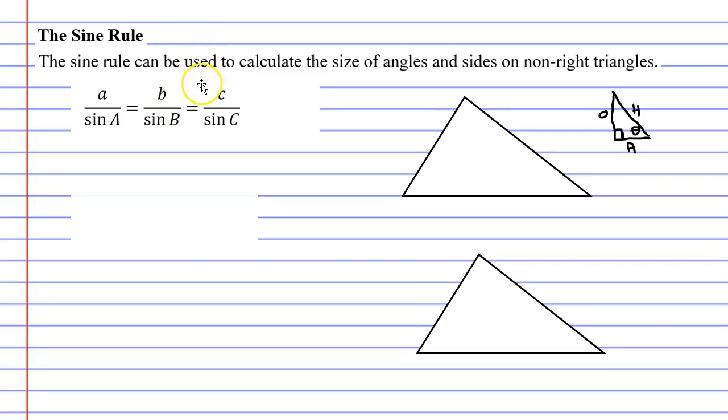When people first see it they can get quite confused because it actually has two equal signs in it. Why would they do that? Well the reason they do that is because you don't have to use the whole formula. In fact you can't use the whole formula.